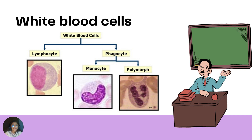A monocyte has a bean-shaped nucleus, while a polymorph has a nucleus with many lobes and granular cytoplasm. These are the key differences between the two kinds of phagocytes.